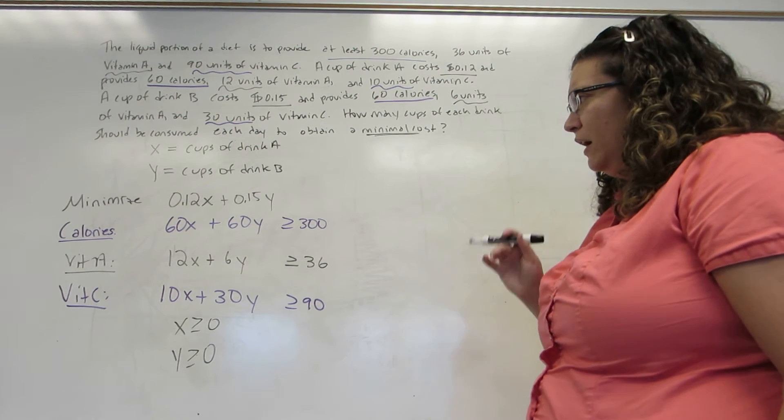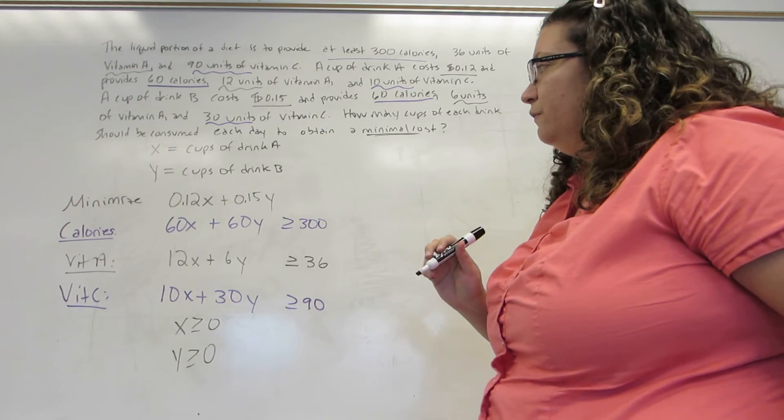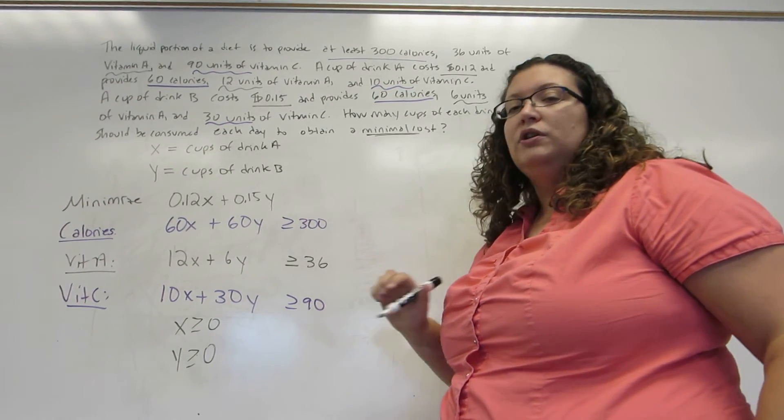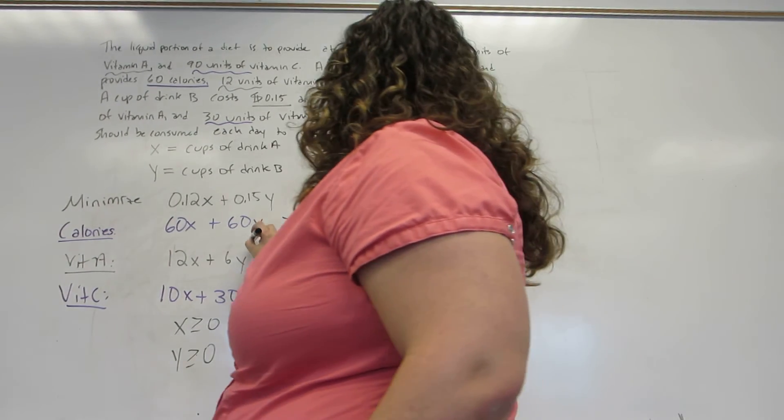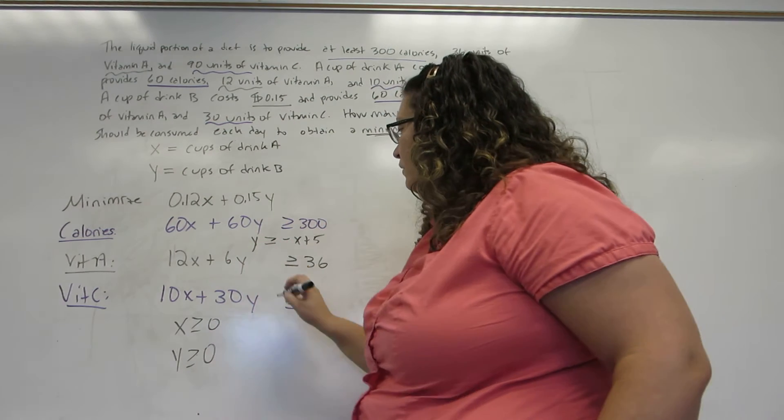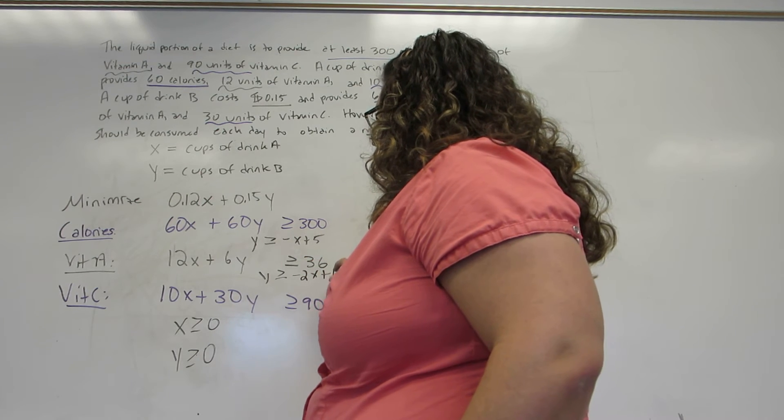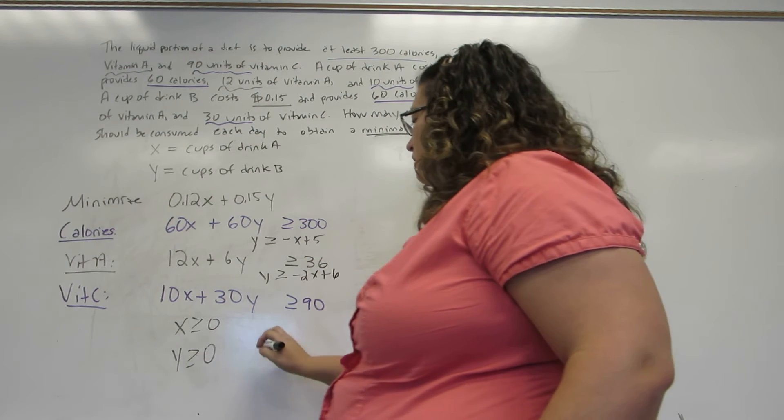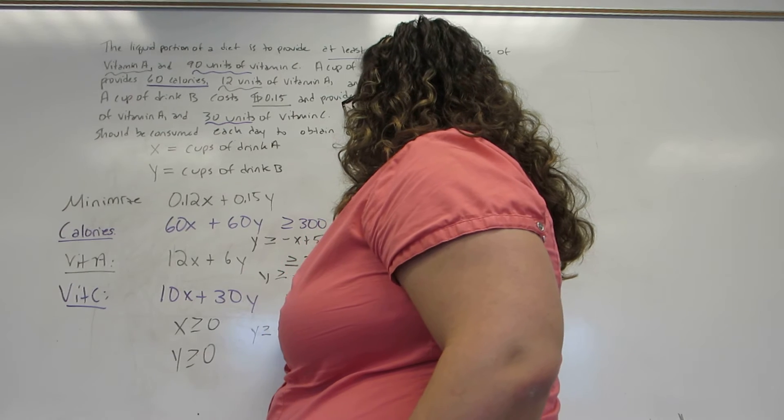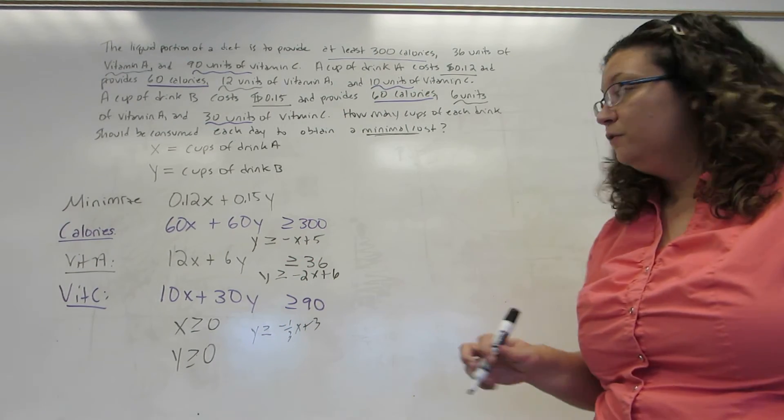Now we have our system of inequalities. We need to graph them. So first, of course, we want to solve for Y. This gives us Y is greater than or equal to negative X plus 5. This gives us Y is greater than or equal to negative 2X plus 6. And this gives us Y is greater than or equal to negative one-third X plus 3 when we solve for Y.